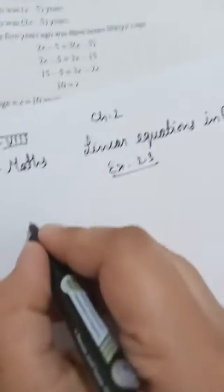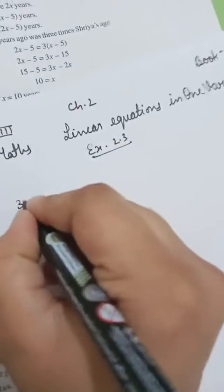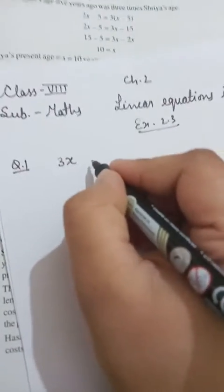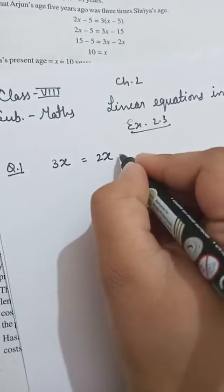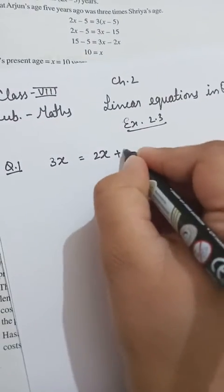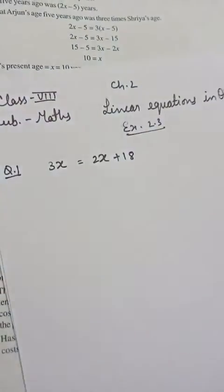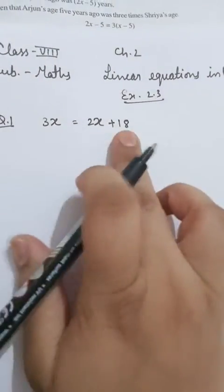Question number 1: 3x is equal to 2x plus 18. Now we have variables on two sides.